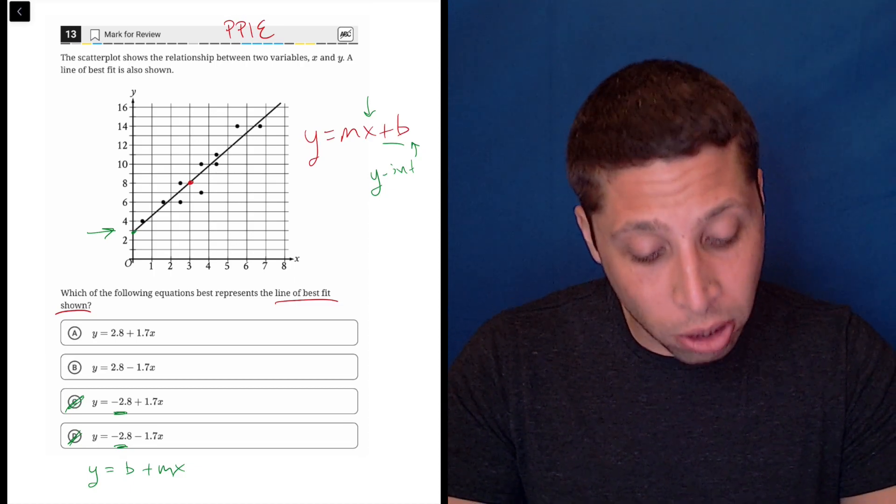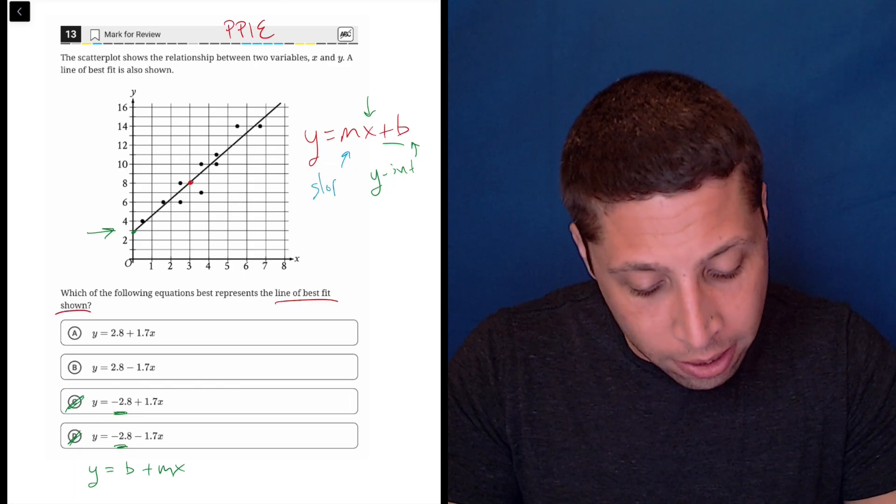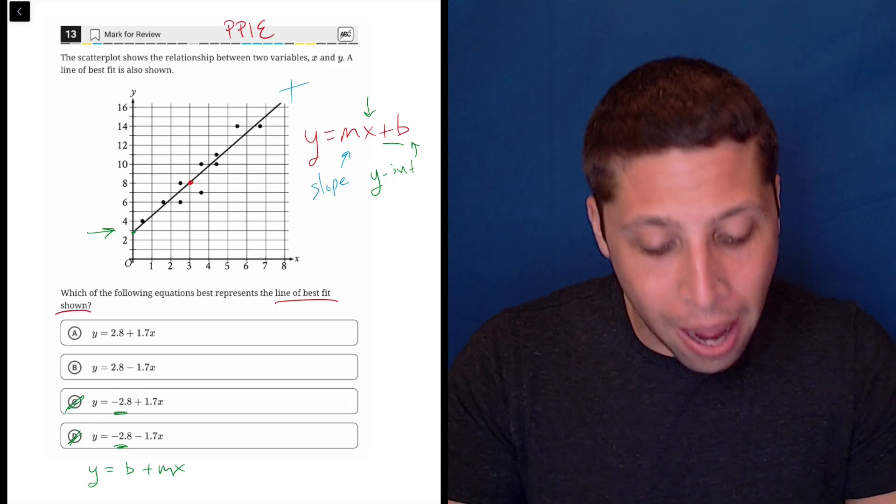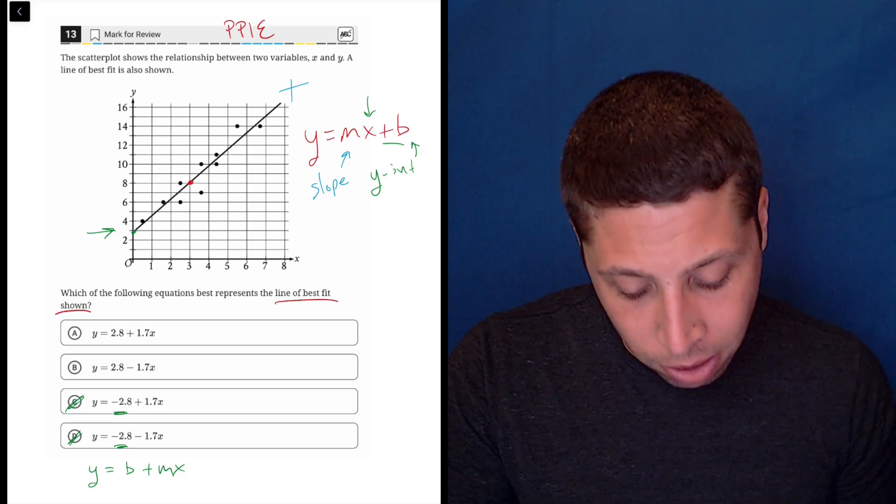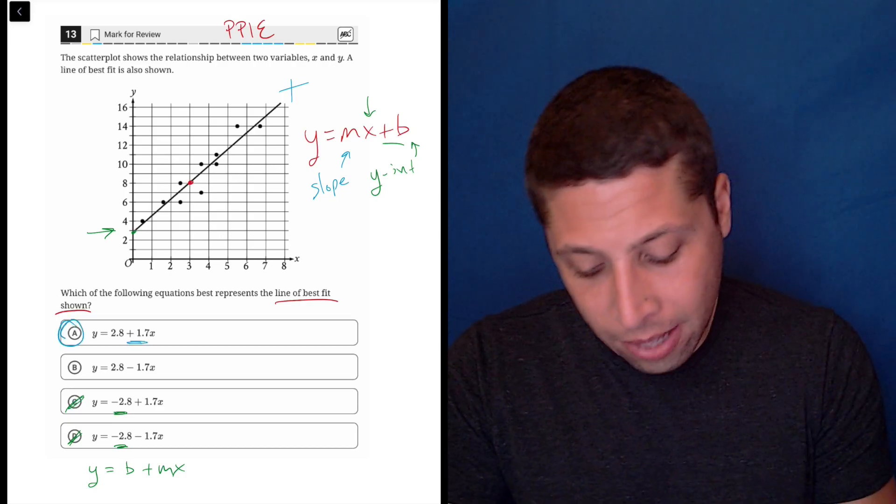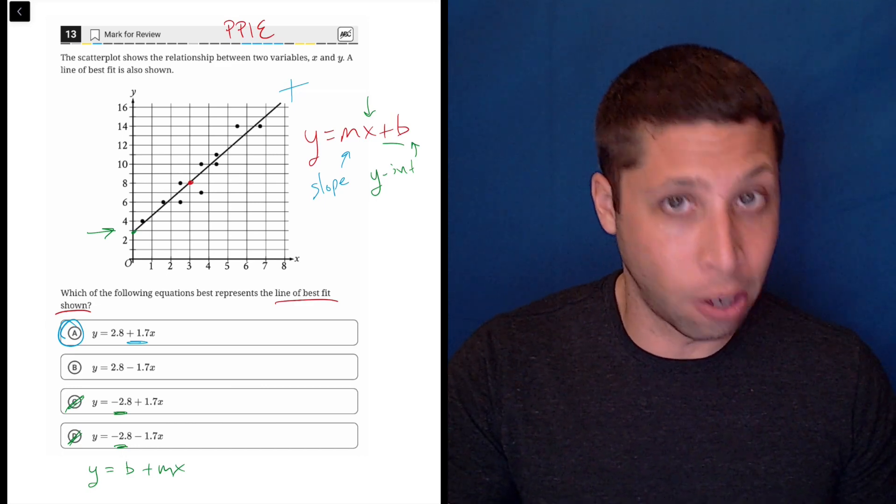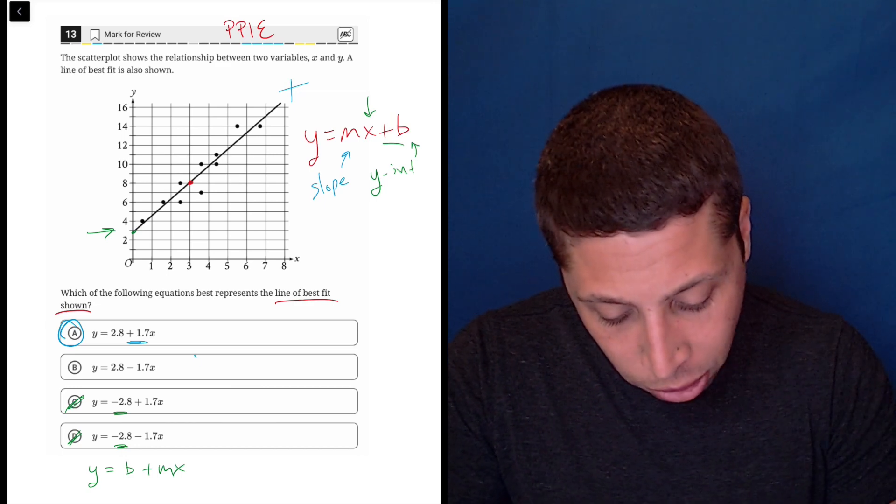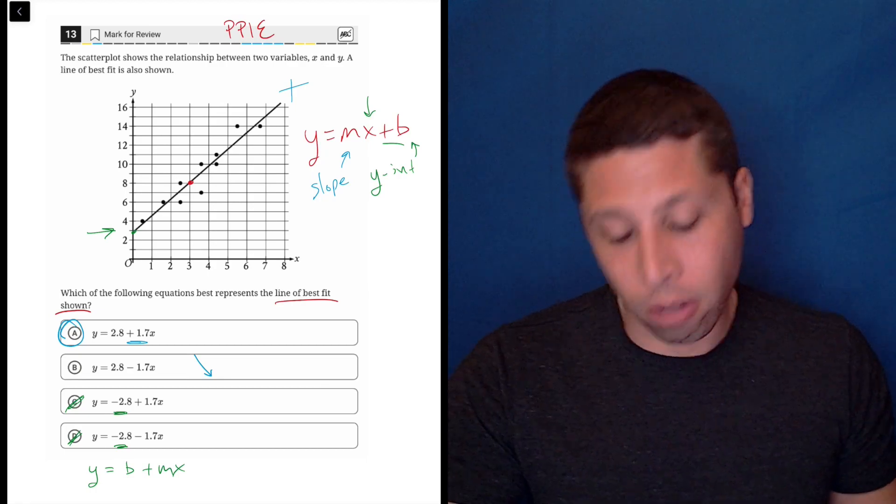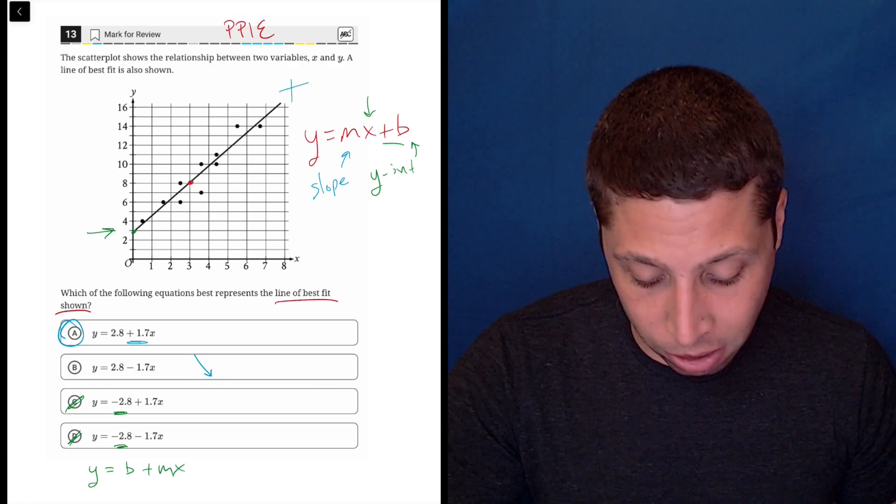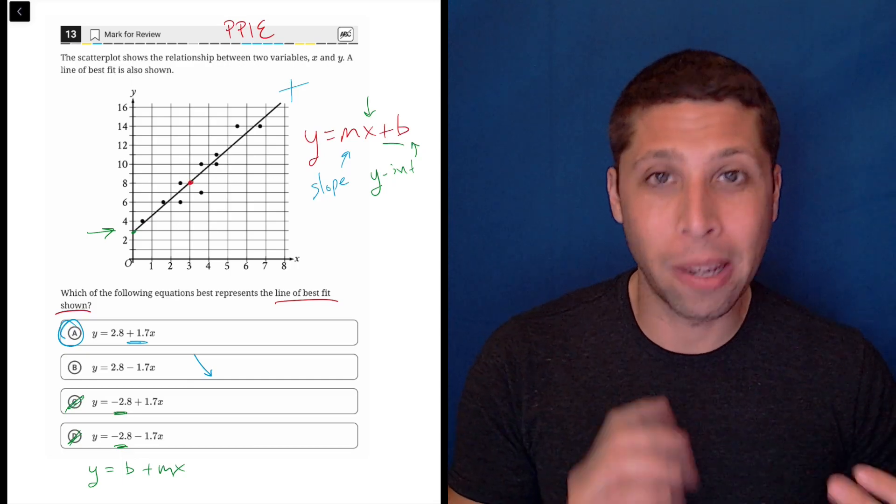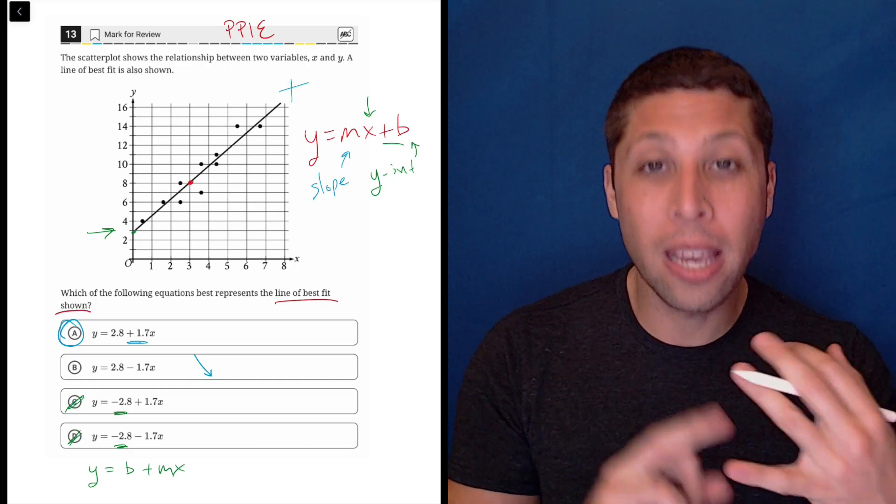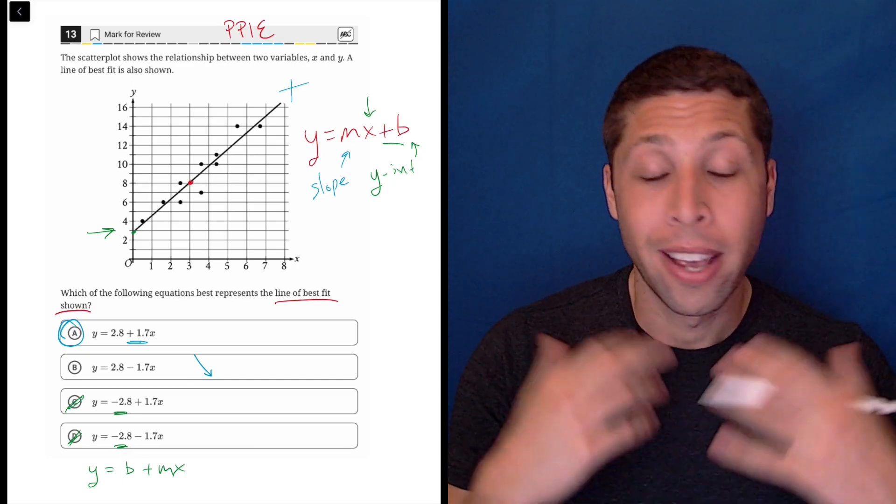If we then think about the slope, the part that is attached to that x, this is clearly a positive slope. It's going up to the right, so that's a positive slope. And so in this case, the plus 1.7 tells me that that is the only one that makes sense. A negative slope would look more like this, and so that would be what choice B would look like. And so we don't have that. So this never required any real calculation, just a basic understanding of y equals mx plus b and positives and negatives on a graph. That's it.